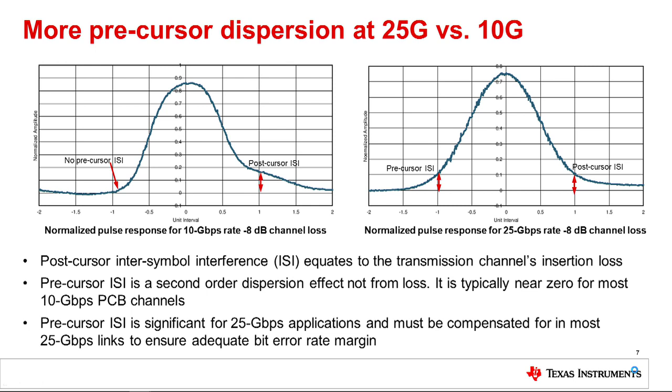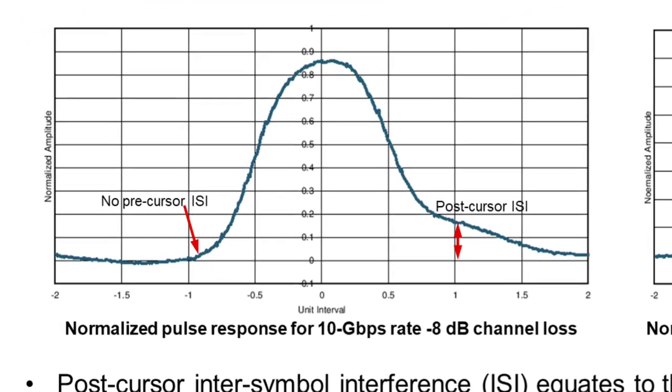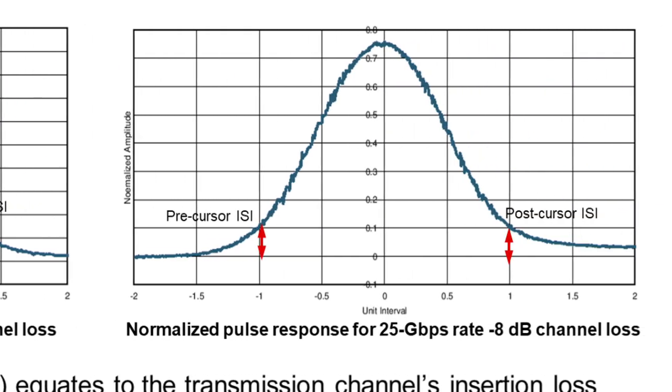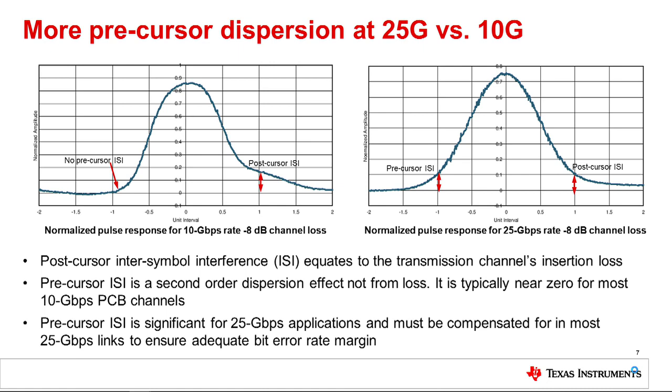Our third transmitter impairment, which is more significant at the 25 gigabits per second data rate, is precursor dispersion. One simple way to illustrate the precursor effect is by examining the response of a pulse launched across a channel for both 10G and 25G data rates. While at 10G, the precursor ISI measured as the signal amplitude one unit interval before the pulse peak is effectively zero, for 25G there is significant precursor ISI present. What this means is that a data bit is spreading in time in such a way that it interferes with the adjacent bits being transmitted. If not compensated for, this signal effect can lead to transmit data bit errors.